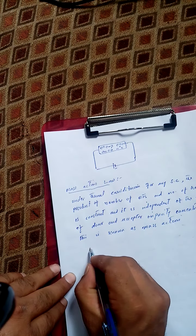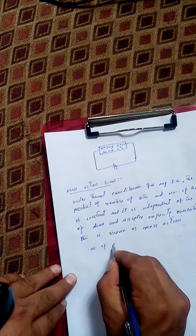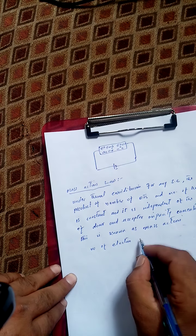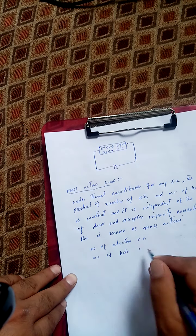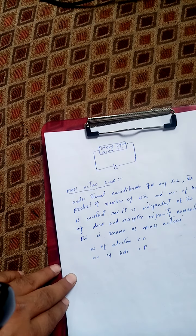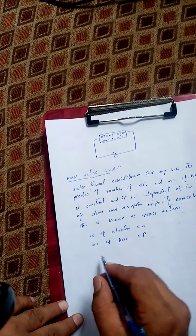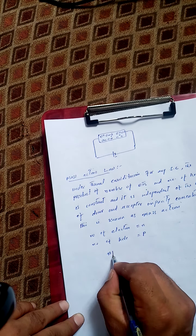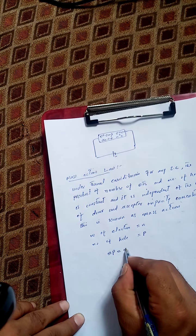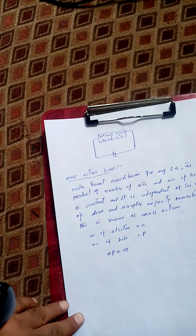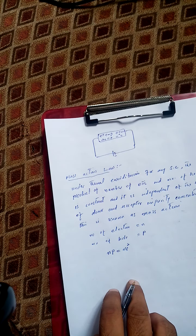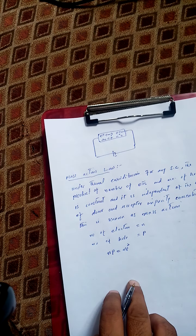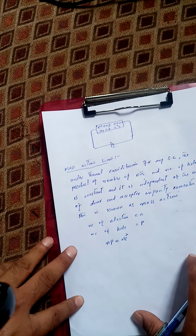As we know, the number of electrons in the conduction band is represented by n, and the number of holes in the valence band is represented by p. According to the Mass Action Law, the product of the number of electrons and the number of holes is a constant equal to ni squared. This constant is independent of how many donor or acceptor impurities we are adding to the semiconductor.